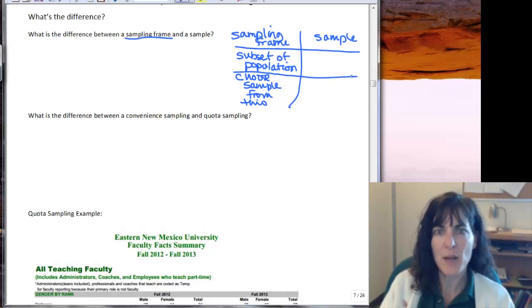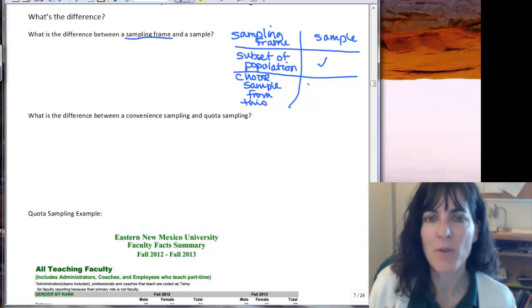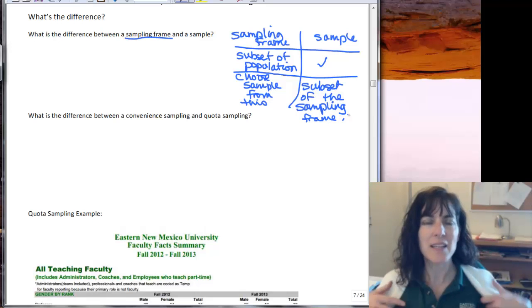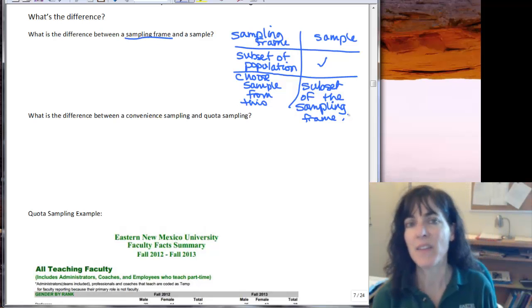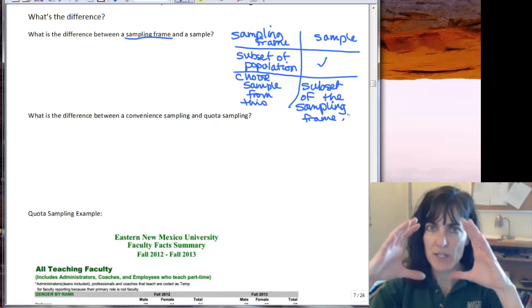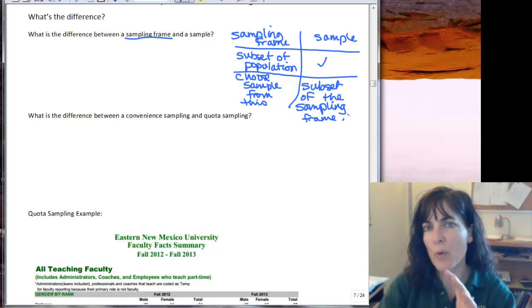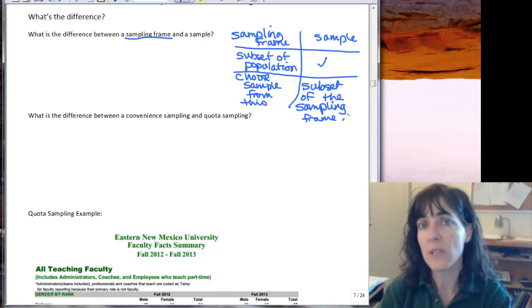And our sample is also a subset of the population but it's even a subset of the sampling frame. And really the best thing is if our sampling frame and our population are the exact same thing, and that our sampling frame isn't smaller but the exact same size as our population. And then when we choose our sample from that it's very representative of our entire population. We didn't exclude a group or another, like for example we didn't exclude all the people that don't have a telephone.